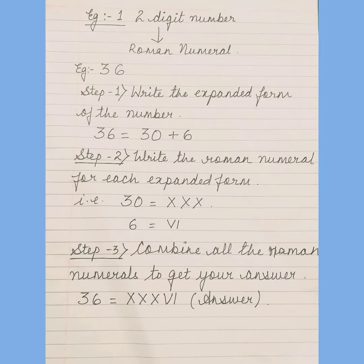36 is the example. So first step is write the expanded form of the number. 36 is equal to 30 plus 6. Step number 2: write the Roman numeral for each expanded form. That is 30 is equal to XXX and 6 is equal to VI.